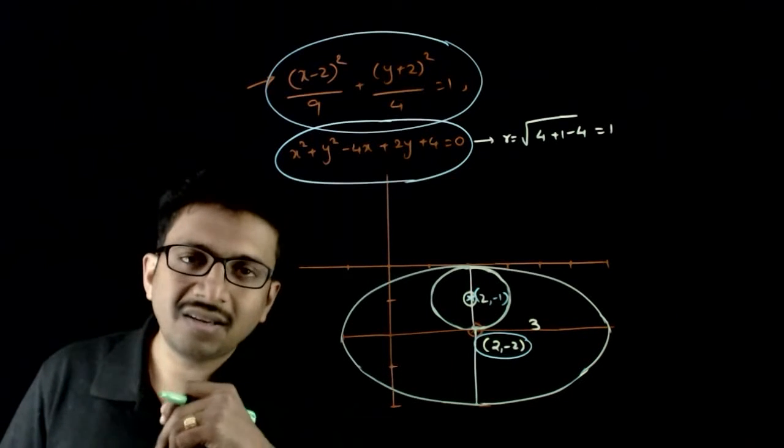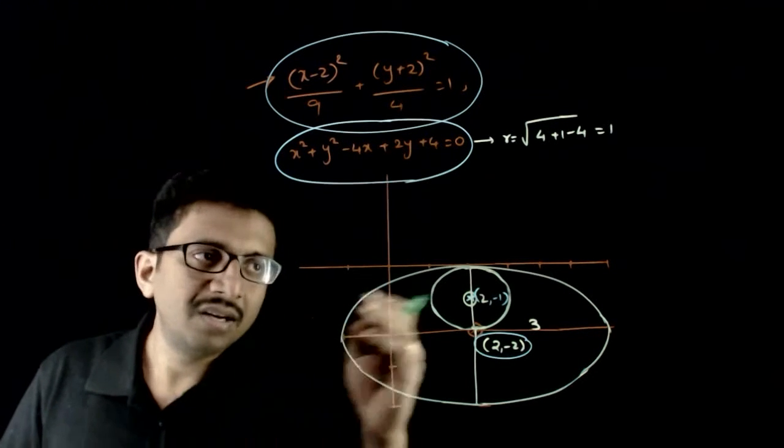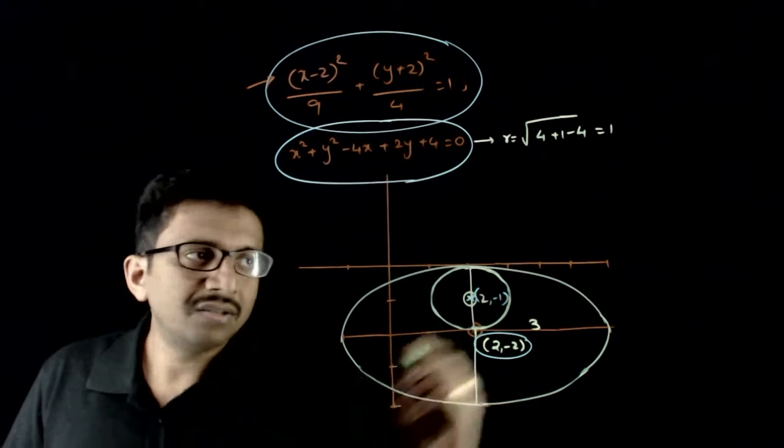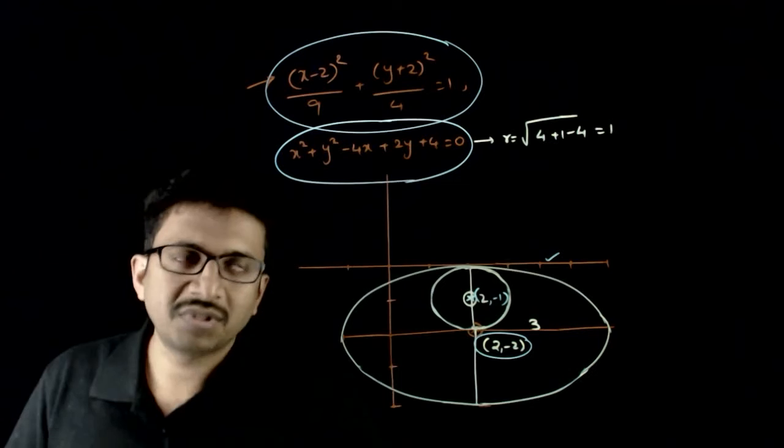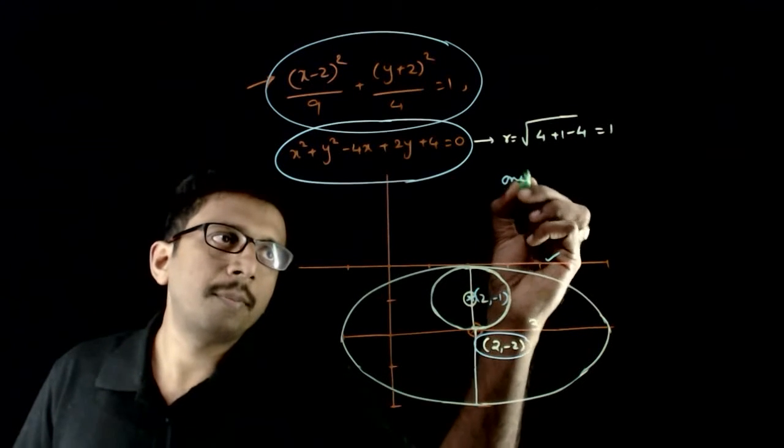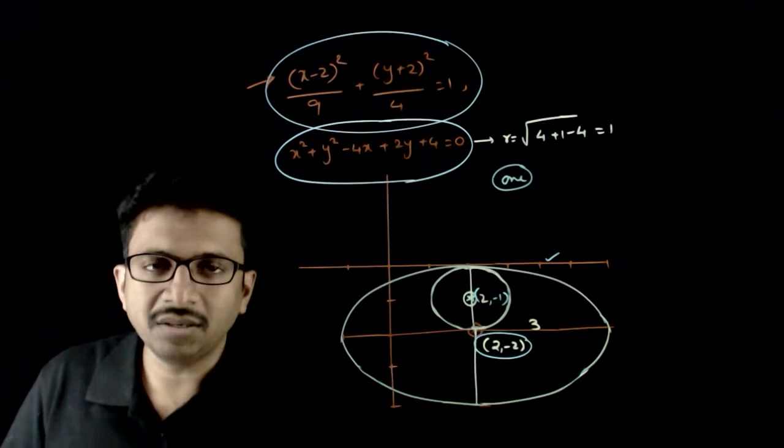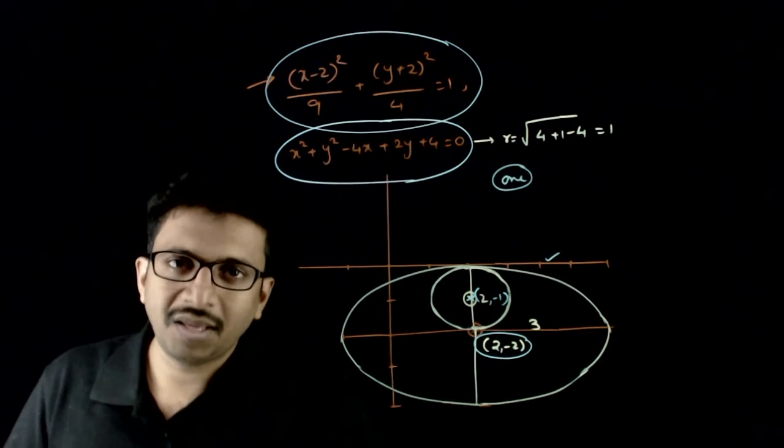Now you can clearly see how many common tangents there are to this ellipse and circle. There is only one common tangent to this circle and ellipse. So the answer is 1. Thank you.